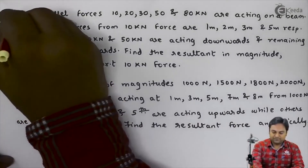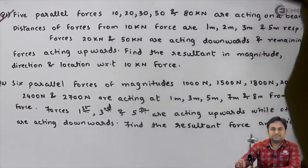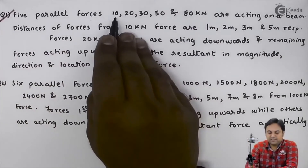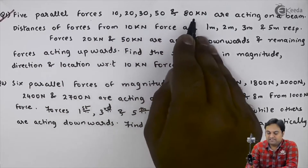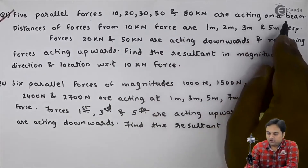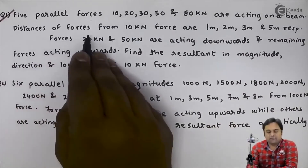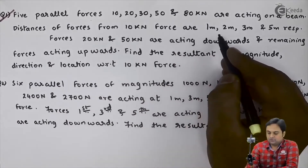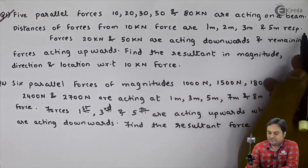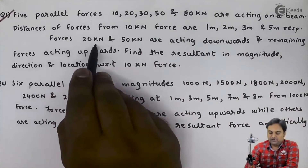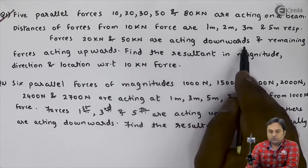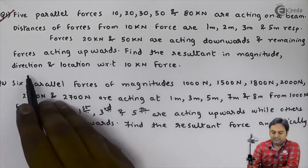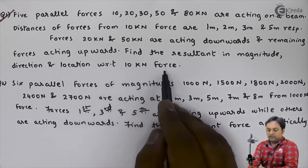Question number one. 5 parallel forces — 10, 20, 30, 50 and 80 kN — are acting on a beam. Distances of forces from the 10 kN force are 1 m, 2 m, 3 m and 5 m respectively. Forces 20 kN and 50 kN are acting downwards and remaining forces are acting upwards. Find the resultant in magnitude, direction and location with respect to the 10 kN force.